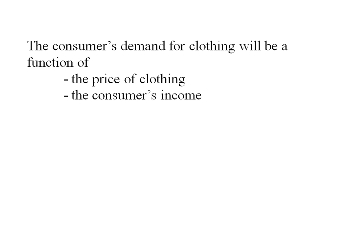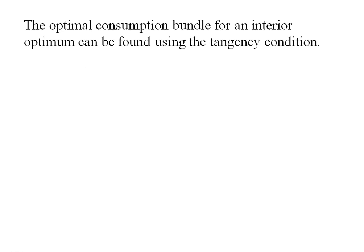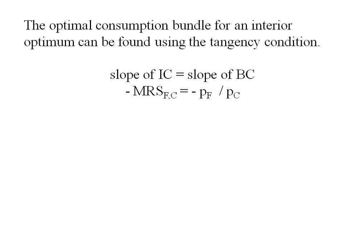The demand for clothing is going to be a function of the price of clothing and the consumer's income. We're going to be looking for a specific functional form. The demand for clothing takes into account the consumer's optimal choice of clothing. We use our tangency condition to find the optimal consumption bundle — the slope of the indifference curve equals the slope of the budget constraint, or the negative of the marginal rate of substitution equals the negative of the price of food over the price of clothing. The price of food is $1.